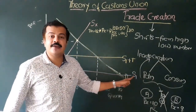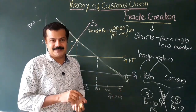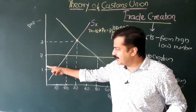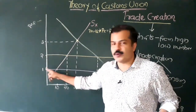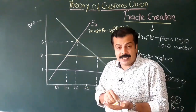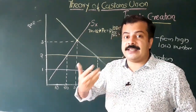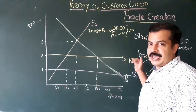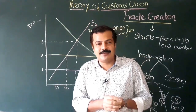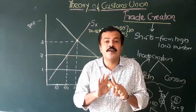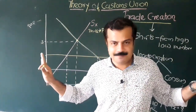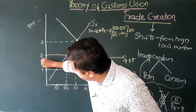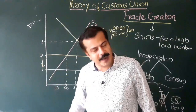Now see the difference: the price of this commodity has declined from Rupees 2 to Rupees 1 when there is an elimination of tariff. Earlier there was tariff; when this country forms the customs union with Country One, there will not be any internal tariff. The price of this commodity declines from Rupees 2 to Rupees 1. Domestic production declines — earlier it was 20, now it is 10. Demand for this commodity is now 70. So 60 is being imported. Earlier imports were 30, now imports are 60.